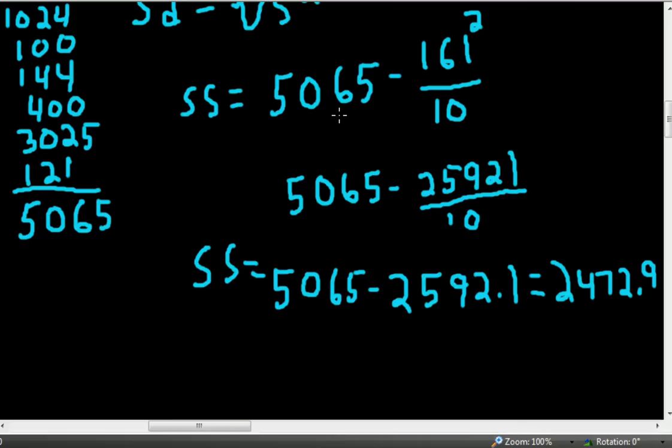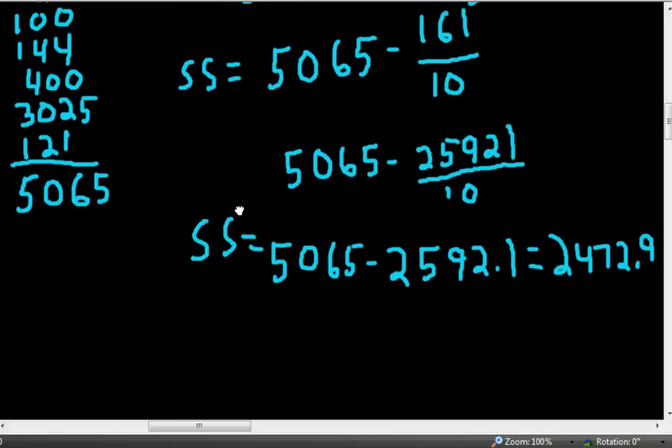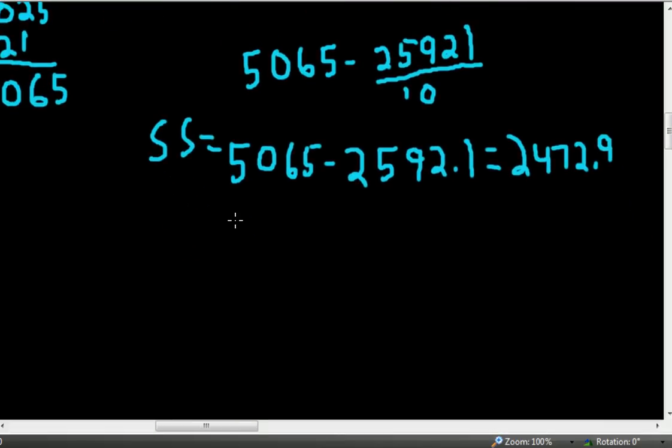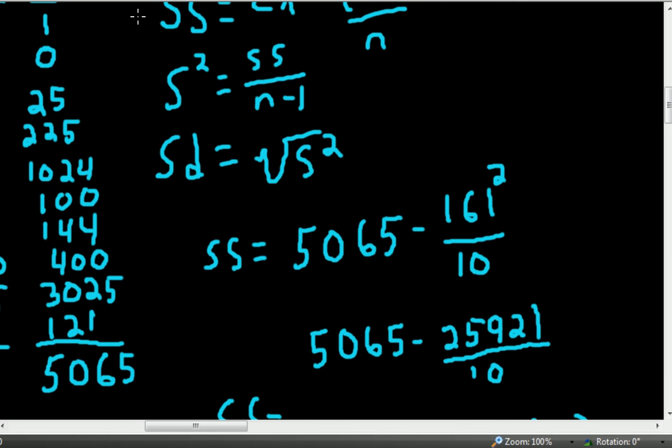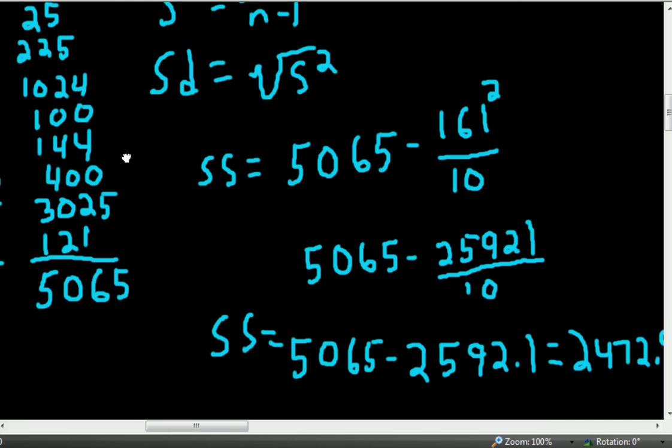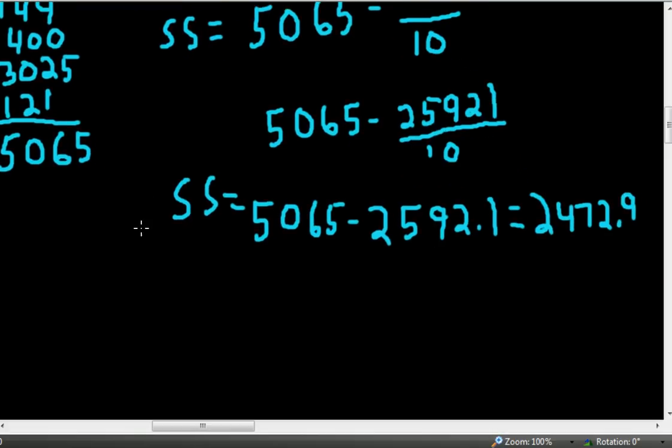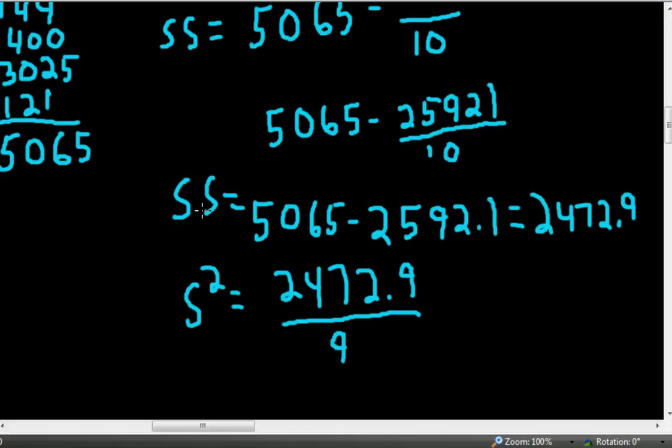So now we would need to calculate the variance. So to calculate the variance from the sum of squares, as we saw from the formula above, we simply take the sum of squares divided by n minus 1. So we have for the variance 2472.9 divided by n minus 1. Here there's a sample size of 10. So n minus 1 would be 10 minus 1, which gives us 9.